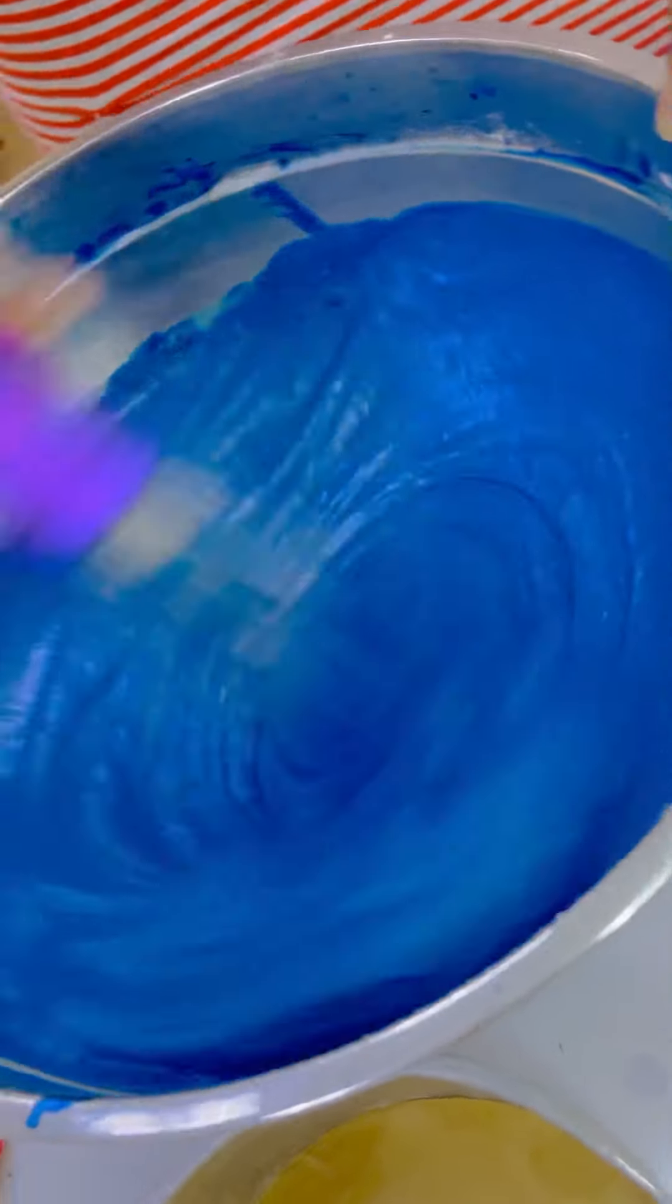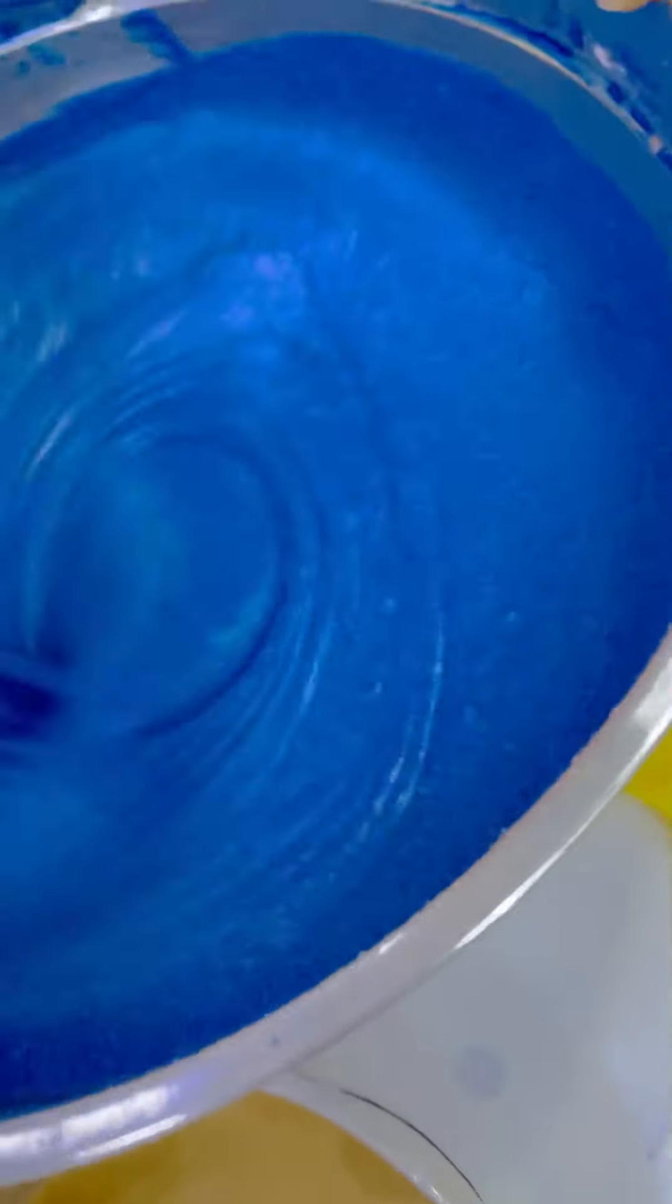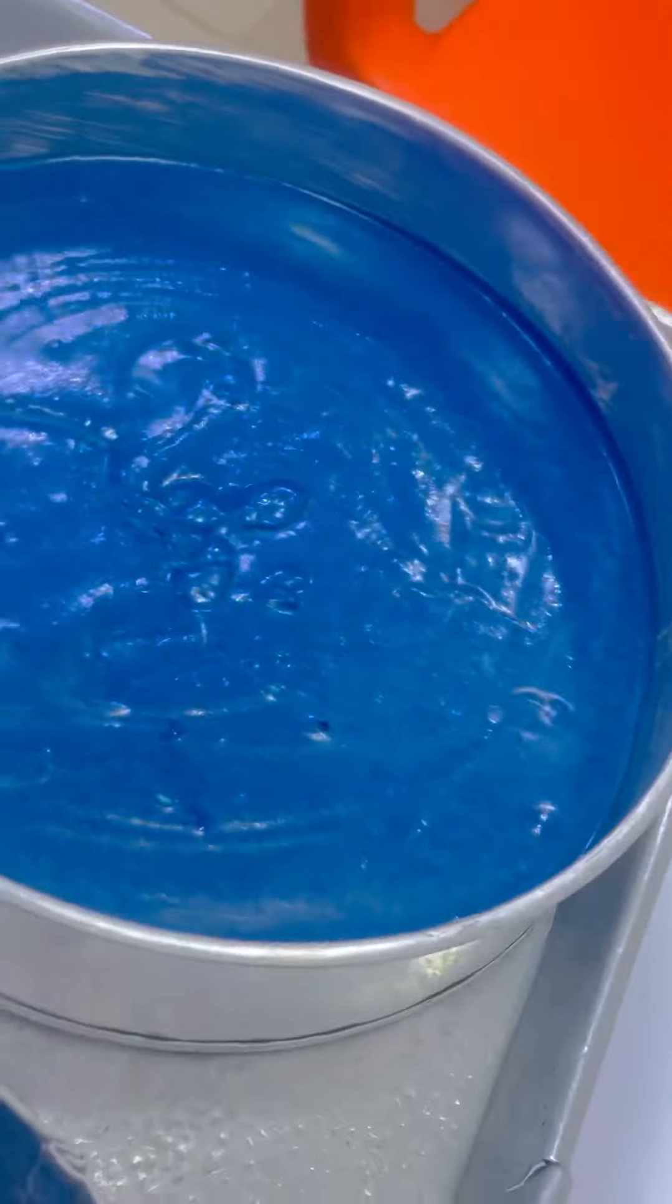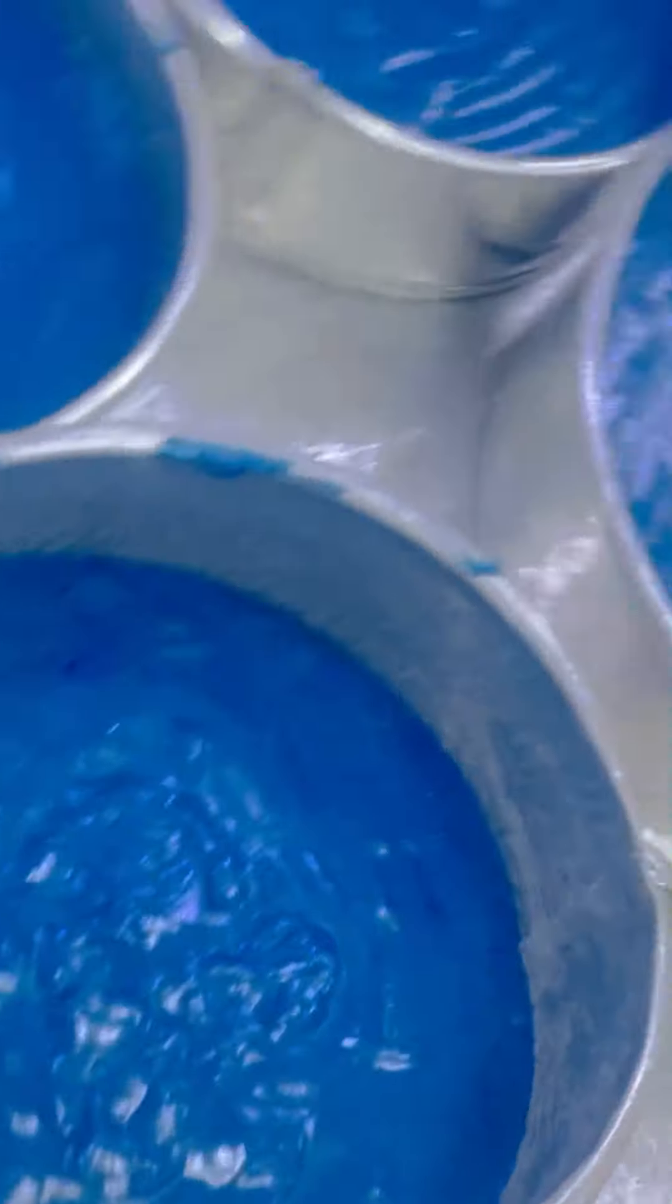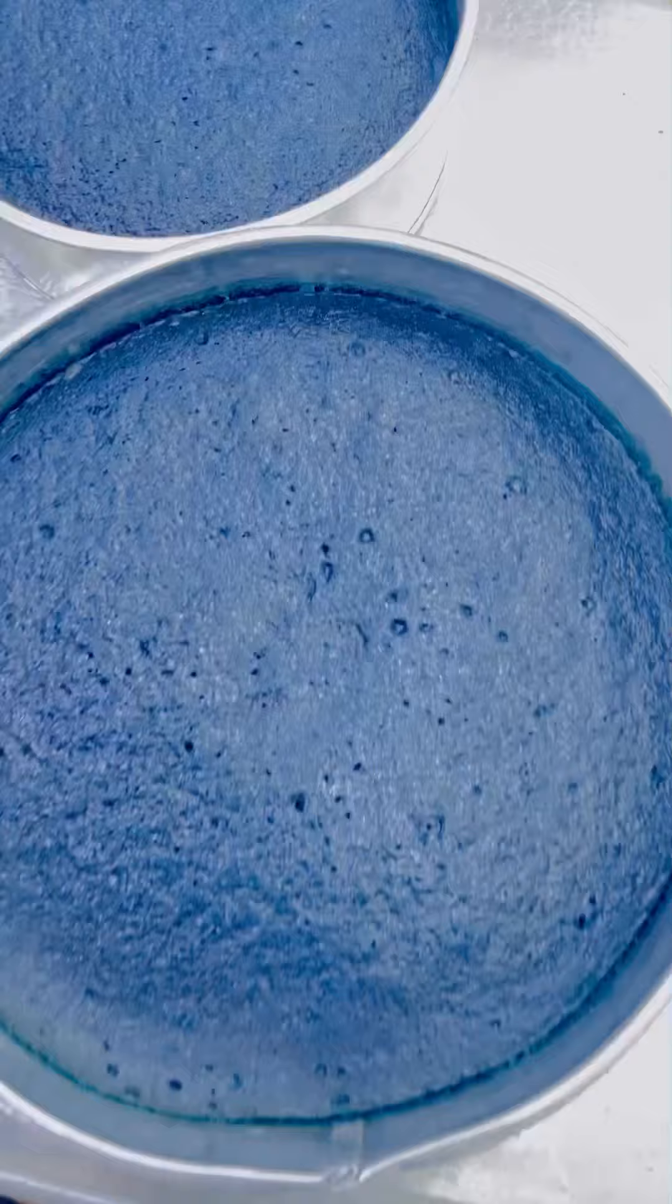We already have our prepared cake pans available that we'll be pouring our batter in. Here we have our cakes beautifully dished out into our cake pans ready to enter our oven. We're going to bake the cake at 120 degrees for about 45 minutes.